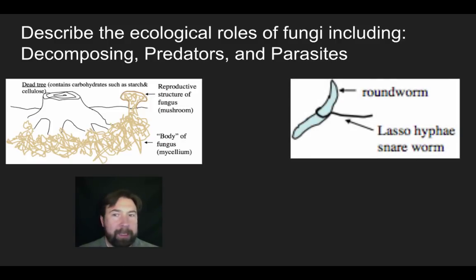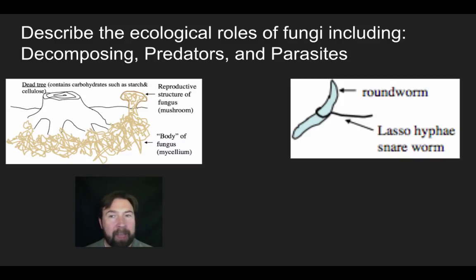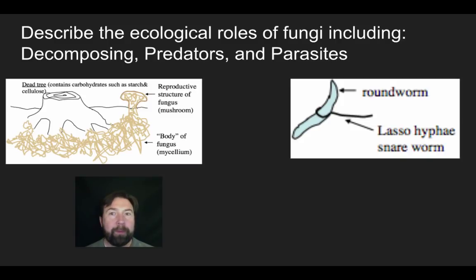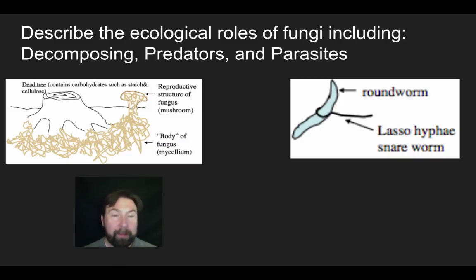An interesting and not very common niche is predatory fungi. A small group of fungi create lasso-like hyphae, and because of their absorptive nutrition, they secrete enzymes outward. If a roundworm like C. elegans swam through, the hyphae would lasso around it, and the enzymes secreted from the hyphae would break down and digest the roundworm, allowing the fungus to absorb its nutrients. It's quite horrifying — imagine a lasso thrown around you that digests your body by secreting enzymes.